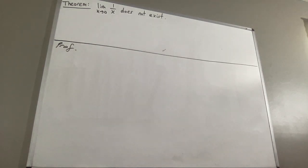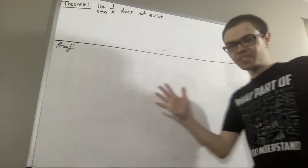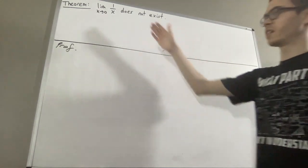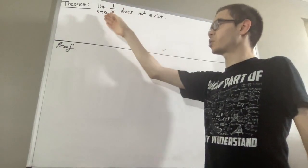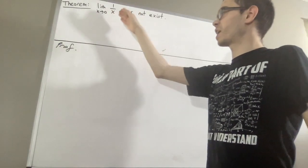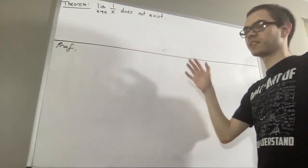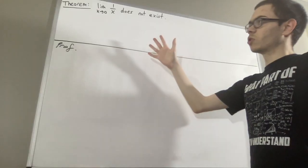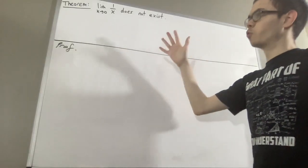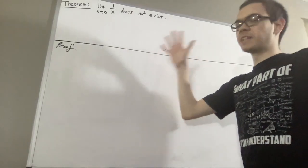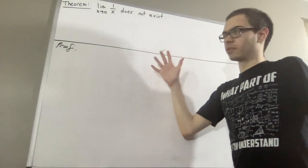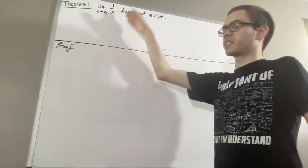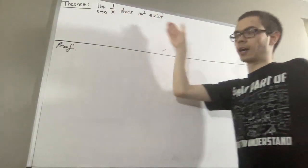In this video, we are going to prove that the limit as x approaches 0 of 1 over x does not exist. To prove that, we are going to prove that given any real number L, the limit as x approaches 0 of 1 over x is not equal to L.